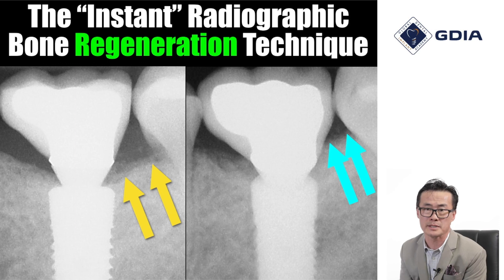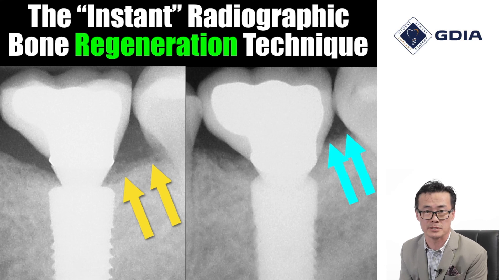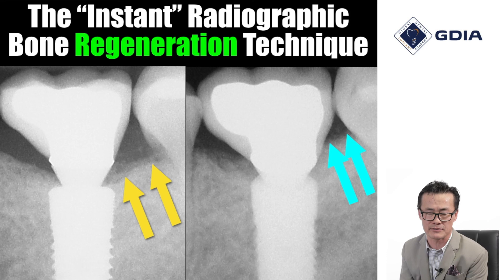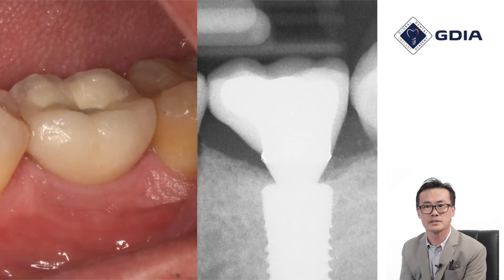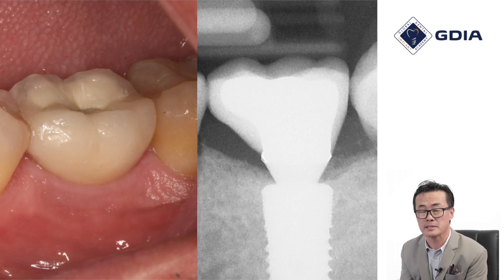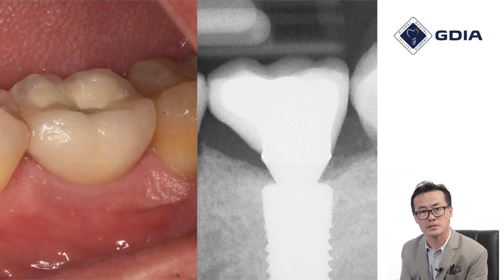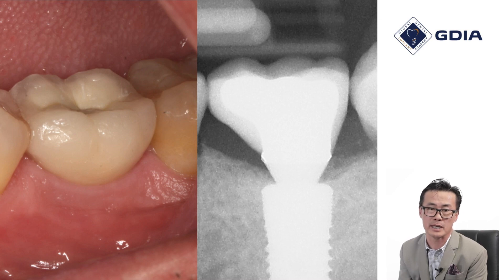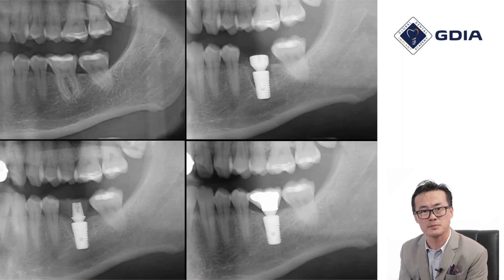We jokingly call this the 'instant radiographic bone regeneration technique' — if you take two images at two different angles, it will look as if bone grew in that space, which is purely an artifact. So here we have a case that's nicely done, a very simple straightforward case like many of us do on a daily basis, but if you want to interpret how that case is doing, it could look as if there's bone loss or a lot of bone gain, simply depending on how the assistant takes a radiograph.